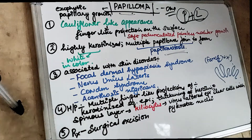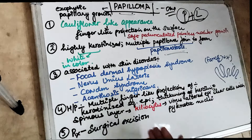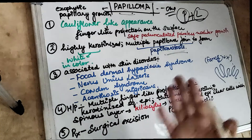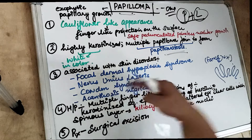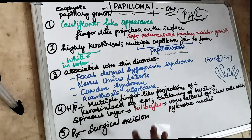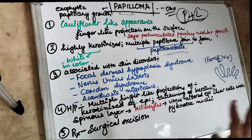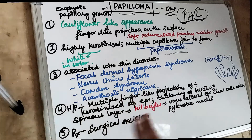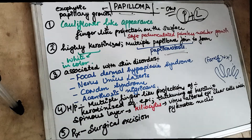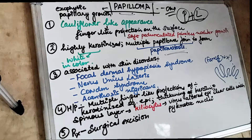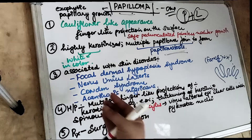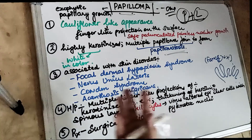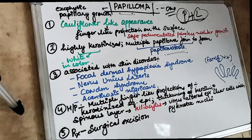There are also some diseases associated with papilloma. The first is focal dermal hypoplasia syndrome. All these disorders are specifically related to skin diseases. As the name suggests — focal means related to specific tissues, dermal means skin, and hypoplasia means not properly developed. The systems involved are the skin, hands, feet, and eyes. It is also known as Goltz syndrome.